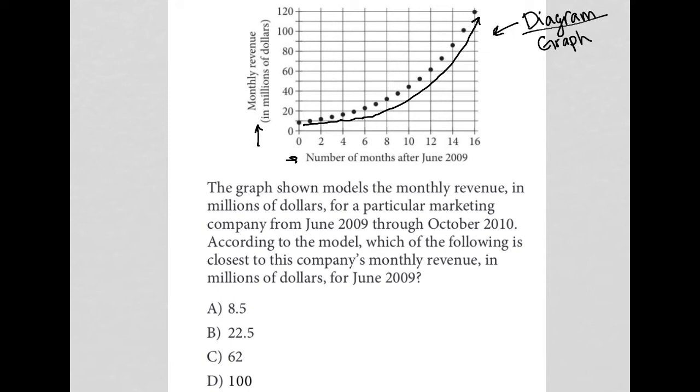So June 2009 is zero months after June 2009, which means we're looking at this point right here - we're looking at the y-intercept. If I want to determine the monthly revenue for June 2009, based upon how the graph is set up, that points me towards the y-intercept here.